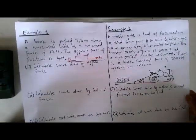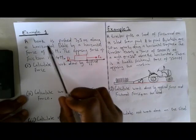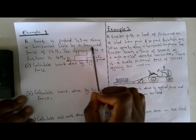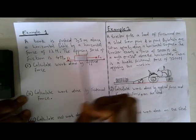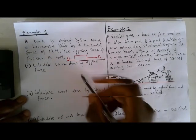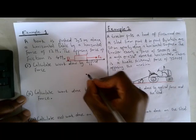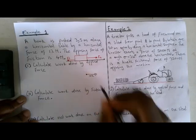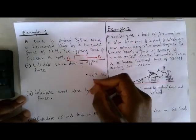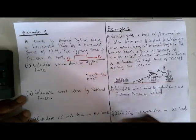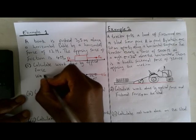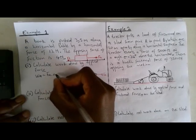Example one: A book is pushed 3.5 meters along a horizontal table by a horizontal force of 12 Newtons. The opposing force of friction is 4 Newtons. Part (a): calculate the work done by the applied force. The displacement and the applied force are both horizontal and in the same direction, so the angle θ equals zero degrees. The work done by the applied force equals F·Δx·cosθ.